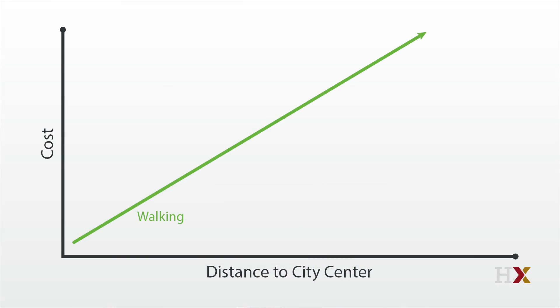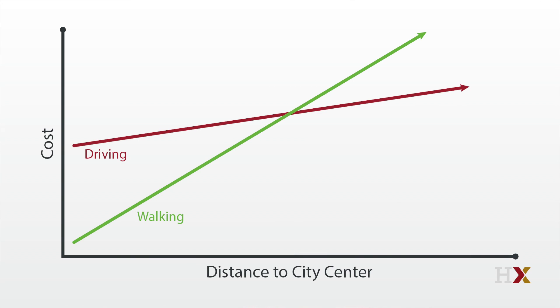Can we jazz it up a bit? Sure. Let's allow two transportation technologies: walking, which looks just like before — a ray coming out of the origin — and a car. A car includes some fixed costs, like the down payment and insurance costs, but then the per-mile commuting costs are lower than walking. So it has an intercept above the origin, but then a flatter slope.